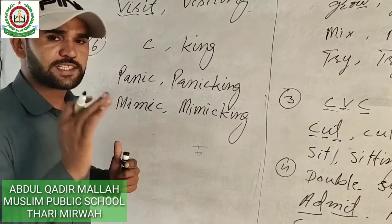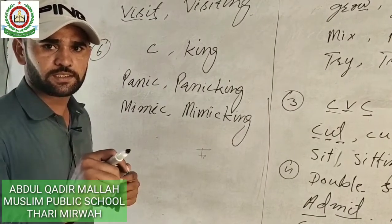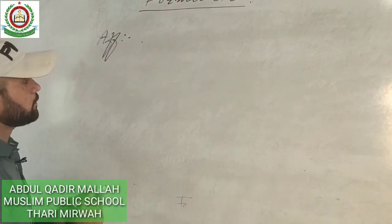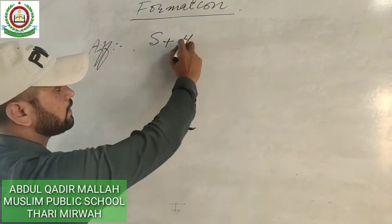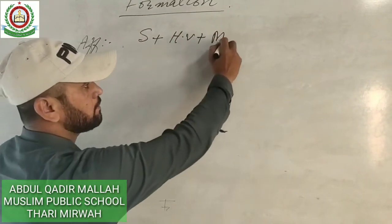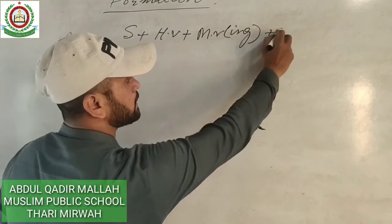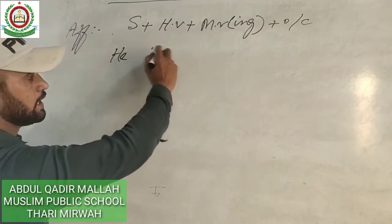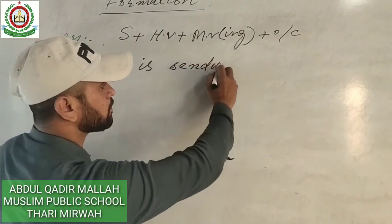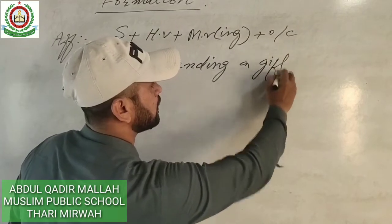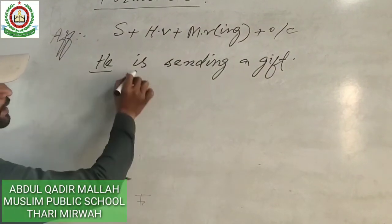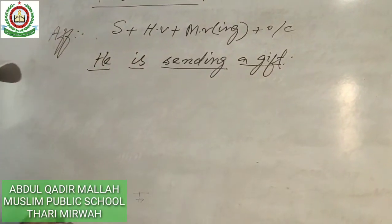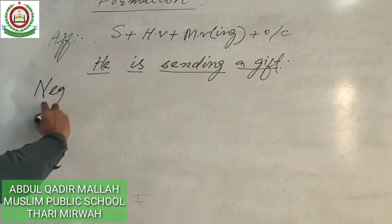Now let's learn the formation of present continuous tense. In an affirmative sentence, the structure is: Subject + helping verb (according to the subject) + main verb in fourth -ing form + object or complement. For example: 'He is sending a gift.' Here, 'he' is the subject, 'is' is the helping verb, 'sending' is the main verb in -ing form, and 'a gift' is the object.